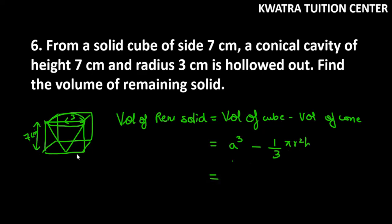Our cube side is 7, so 7 cubed is 343. For the cone, using the formula with pi as 22/7, we get 66. So 343 minus 66 equals 277 cm cubed.